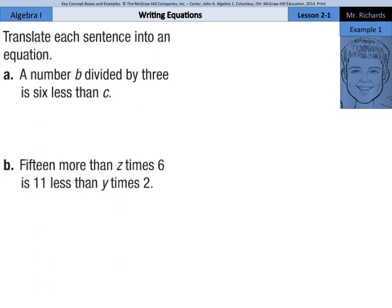In example 1A, a number B divided by 3 is 6 less than C. Well, 'is' is a key word for equals in our sentences to equations. So let's tackle the left side first. A number B divided by 3 can be written like this.